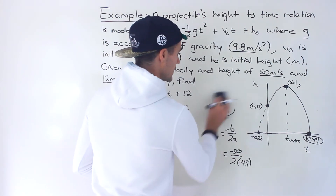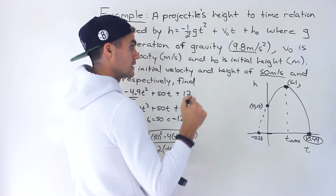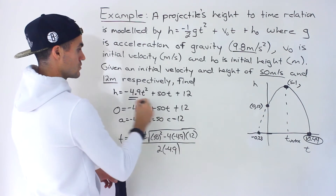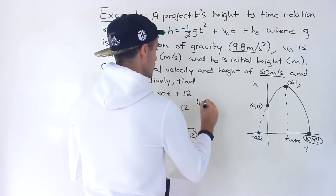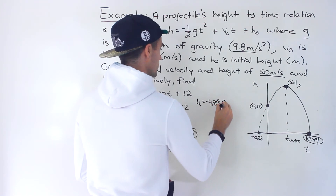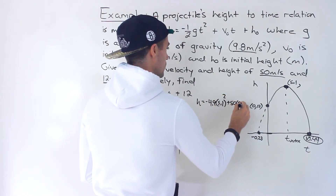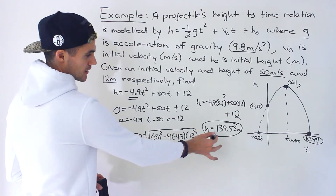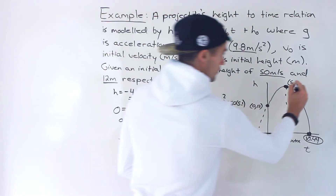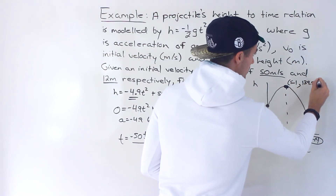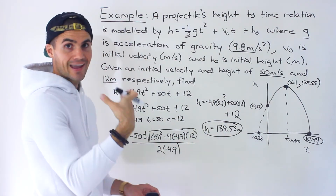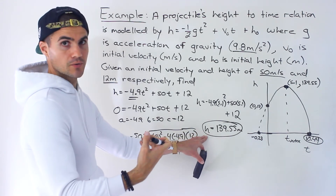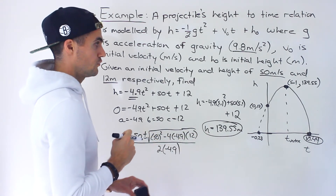Once we have that t value, we plug t equals 5.1 back into the equation to find the corresponding h value. So h equals negative 4.9 times 5.1 squared plus 50 times 5.1 plus 12. When you do that calculation, you get approximately 139.55 meters. That is the h value of the vertex — the maximum height — and that's the answer for part b.